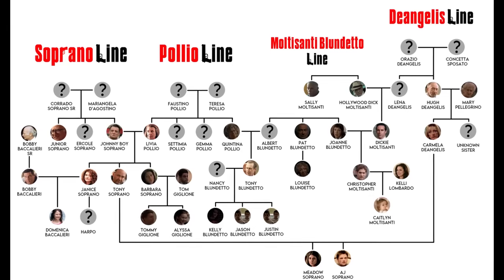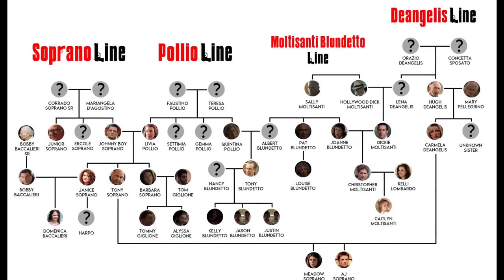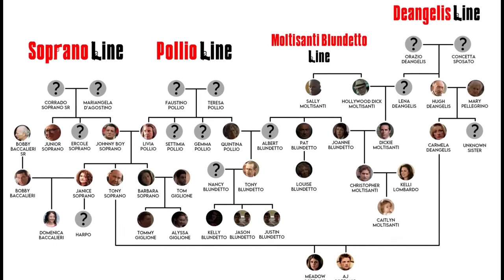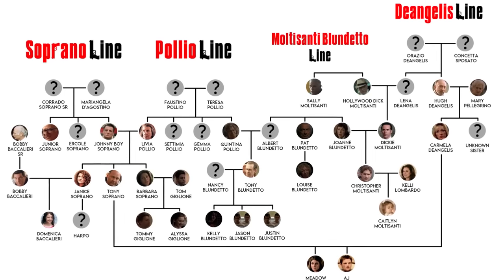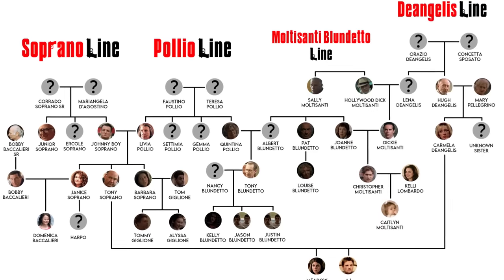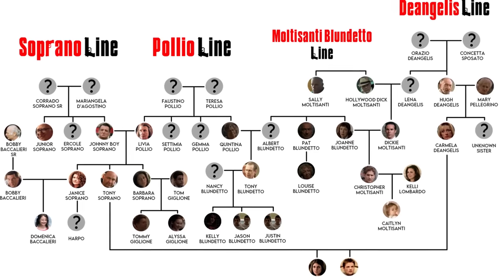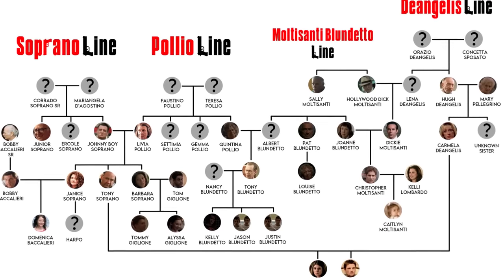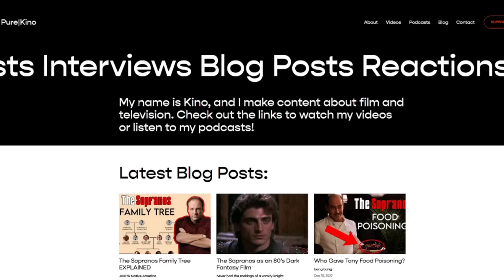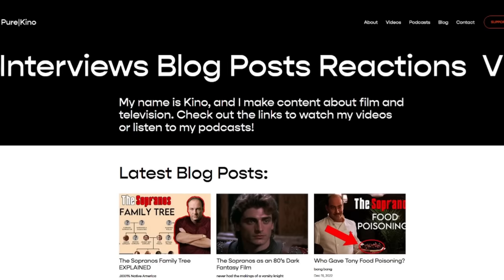So I set about making a comprehensive visual to show how all the characters are connected. This took me way more time in Photoshop than it probably should have, but I wanted one clear tree for the whole Sopranos family, and this is how I was able to visualize it. These family trees will be available for download on my website, linked in the pinned comment.